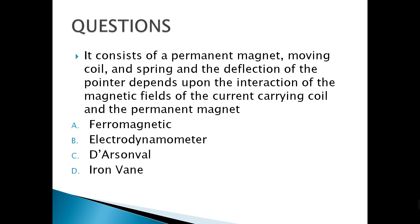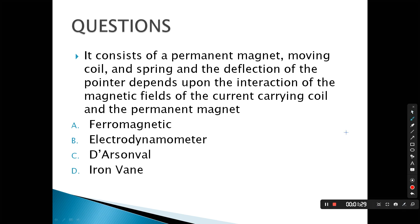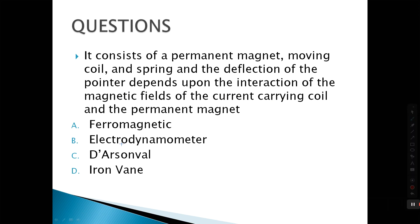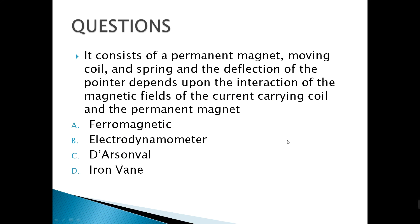Next question: it consists of a permanent magnet, moving coil, and spring, and the deflection of the pointer depends upon the interaction of the magnetic fields of the current-carrying coil and the permanent magnet. The name itself speaks for the answer — the D'Arsonval meter movement, using the keywords permanent magnet, moving coil, and spring.